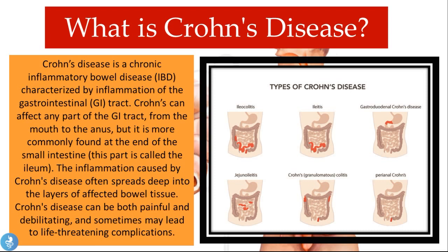Looking at the different types of Crohn's disease, the disease causes inflammation in various parts of the GI tract from the mouth to the anus, most commonly affecting the ileum, which is the last part of the small intestine. The disease does not only affect the mucosal layer, the innermost lining of the bowel wall, but spreads into deeper layers such as the submucosa, the muscular layer, and in some cases the serosal layer.